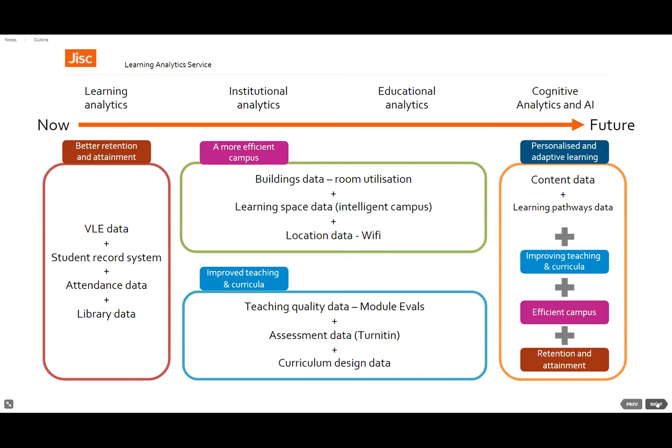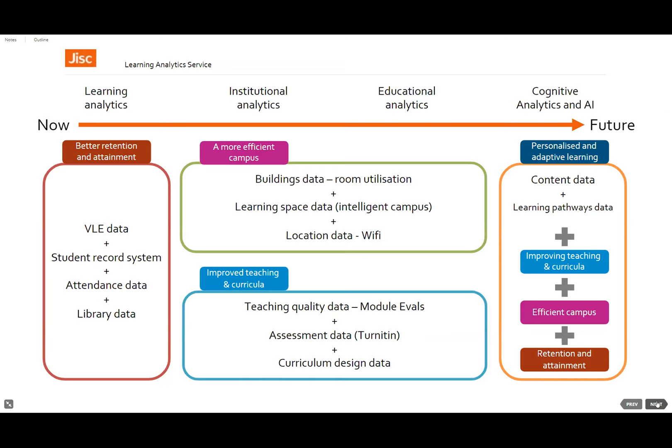In the longer term — and some institutions are doing this already — there are chatbots and library chatbots, apps that know what students want before they've even asked, linking with more predictive data: predictive grades, timetables, and so on. JISC's remit is really to try to make that work for the whole sector rather than just being proprietary for individual institutions.